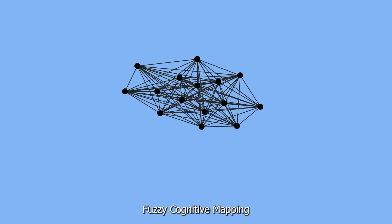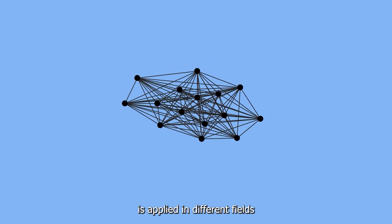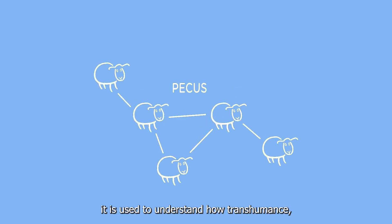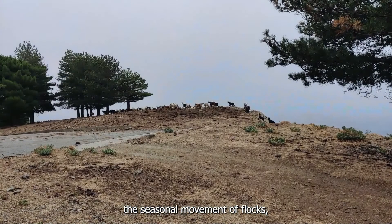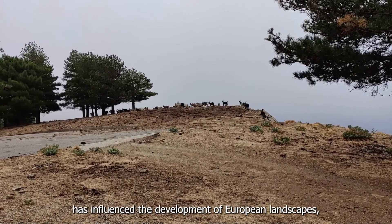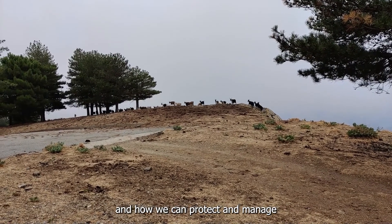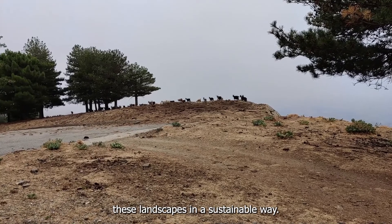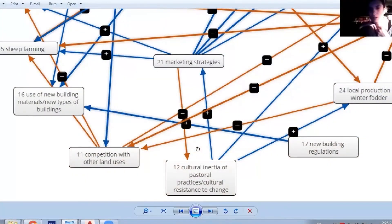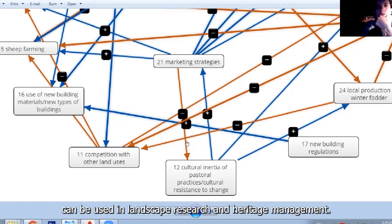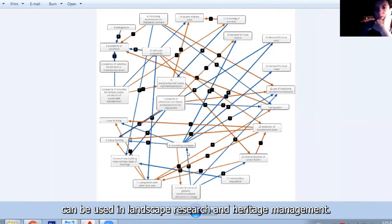Fuzzy cognitive mapping is applied in different fields to address different questions. In the PECUS project, it is used to understand how transhumance, the seasonal movement of flocks, has influenced the development of European landscapes, and how we can protect and manage these landscapes in a sustainable way. This will be our case study, to understand how fuzzy cognitive mapping can be used in landscape research and heritage management.